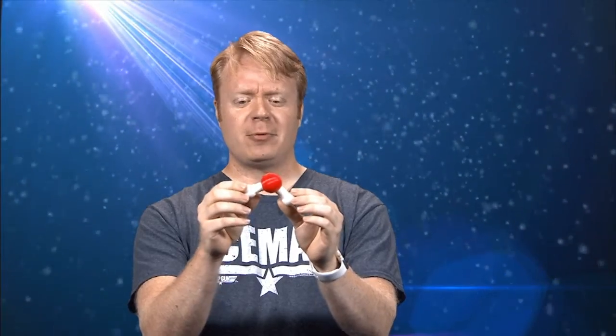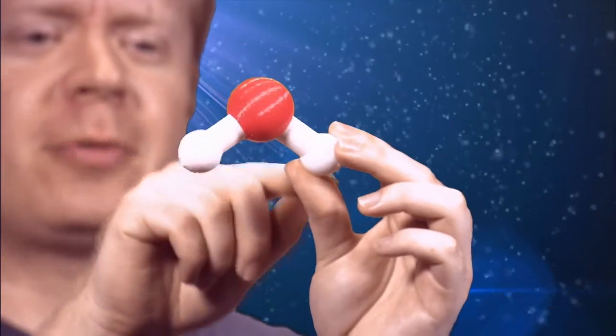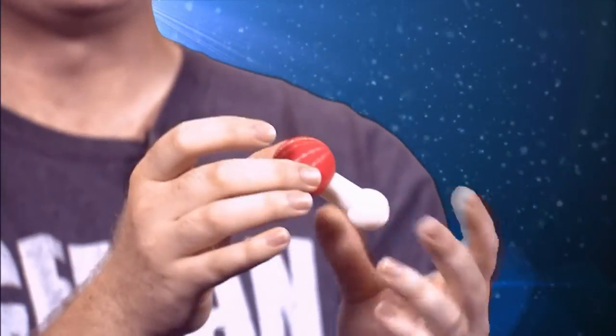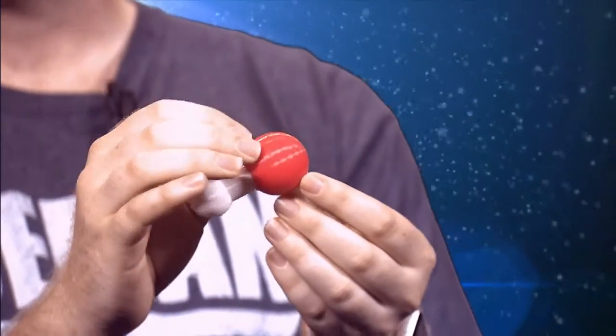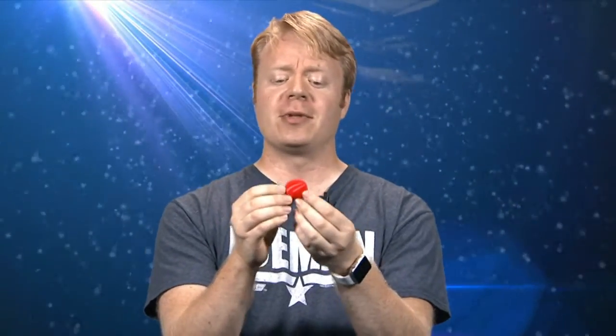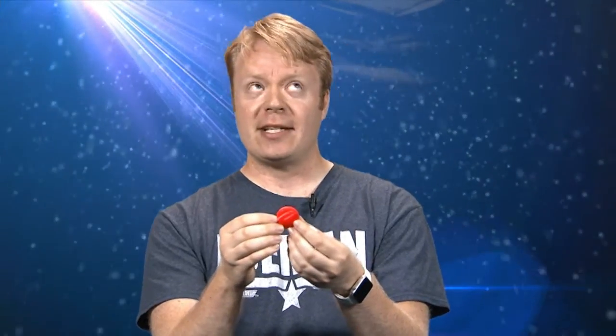Now another thing that's interesting about water is, why does it have this particular angle and shape? Well, this angle right here is determined because of the other electrons around the oxygen. Just because the oxygen shared one of its electrons with this hydrogen and one of its other electrons with this other hydrogen, it still has, what, six other electrons hanging around.